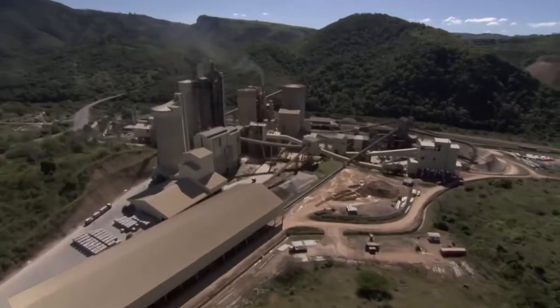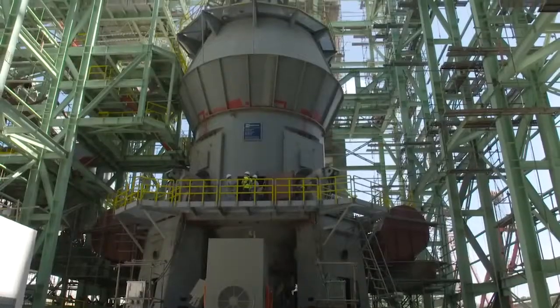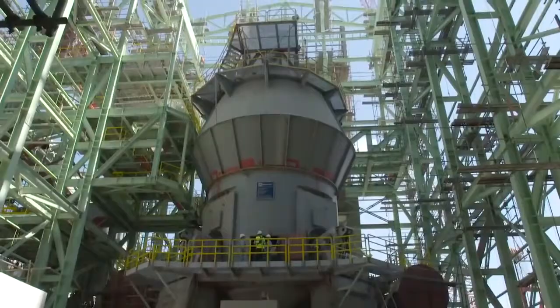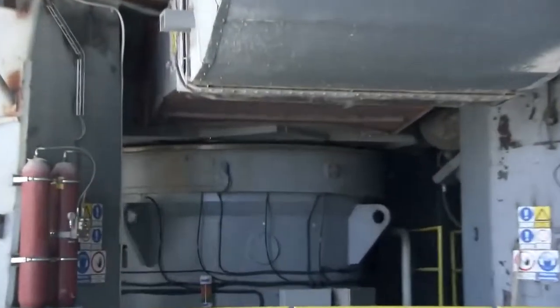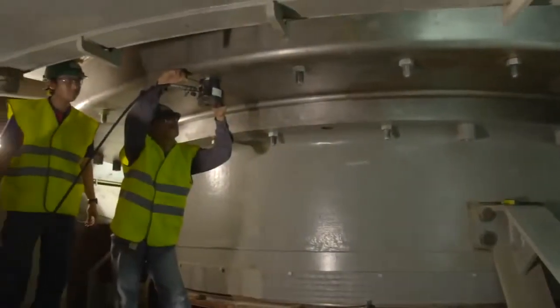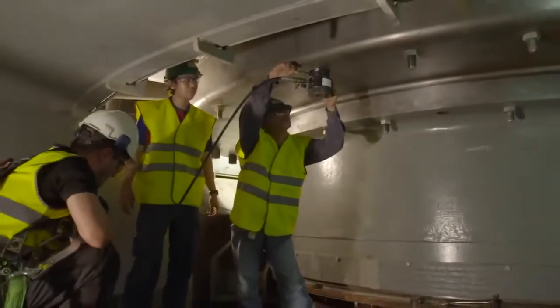F.L.Smidth has more than 20 years of experience with OK mills, which offer optimal operation with cement, slag, and raw materials. F.L.Smidth OK mills use 30-50% less energy than ball mill systems, and a simple layout with fewer machines in the mill circuit ensures high run factors and low maintenance costs.